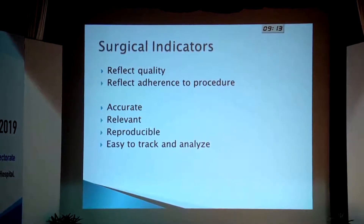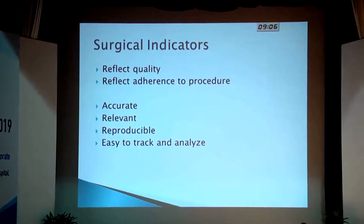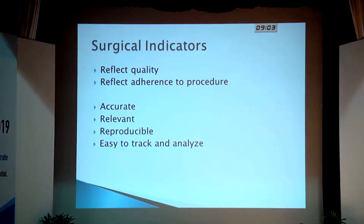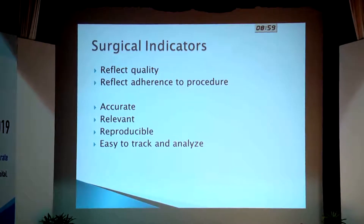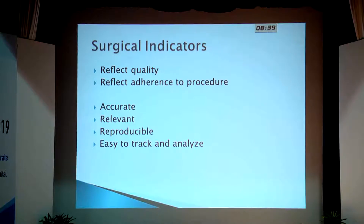Now while choosing an indicator, you need to have one that's accurate and relevant to the problem you're thinking of assessing. You need an indicator that you can continue to measure — it has to be reproducible. You should measure it today, tomorrow, one week from now, one month from now, a year from now, using the same yardstick, which will enable you to compare actual quality and see whether quality is actually improving. And it should be something that's easy to track and analyze.